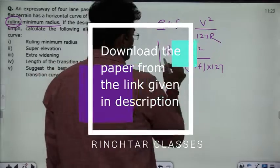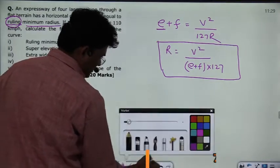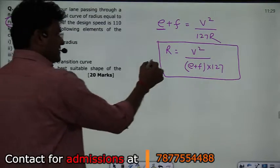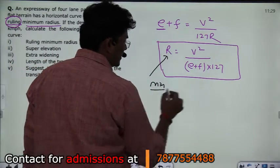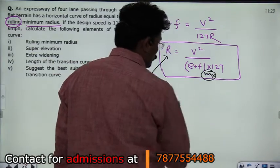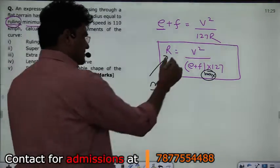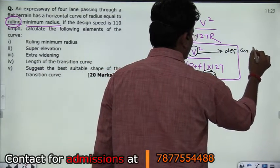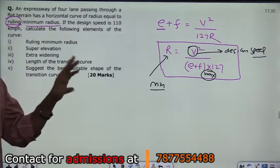Since the question asks for the ruling minimum radius, we need the maximum value of (E + F). With V set to the design speed, we will obtain the ruling minimum radius. The design speed given in the question is 110 km/h.